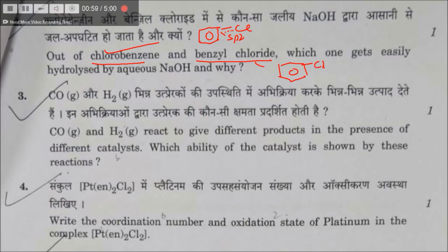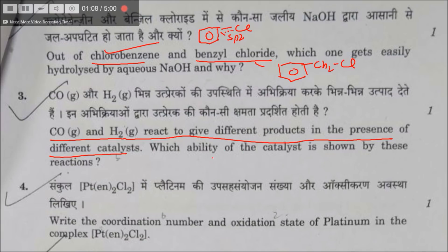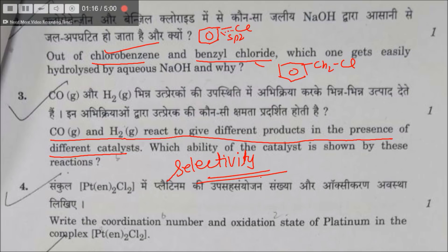In benzyl chloride, chlorine is attached to the CH2 group next to benzene. CO and H2 react to give two different products in the presence of different catalysts. This represents the ability of a catalyst known as selectivity — different catalysts are selective to give different products.